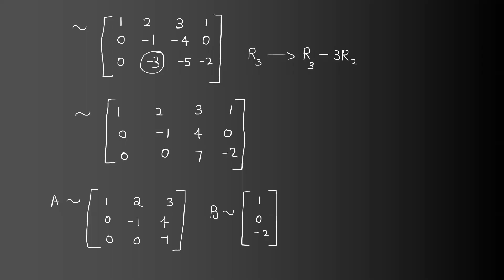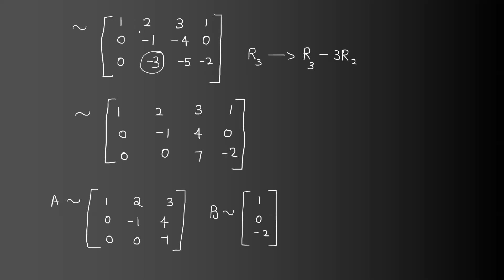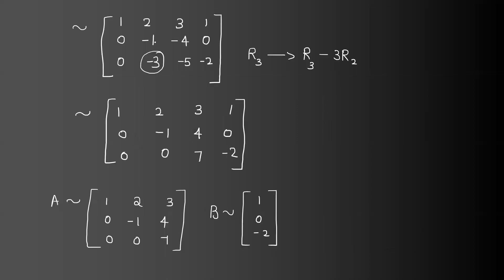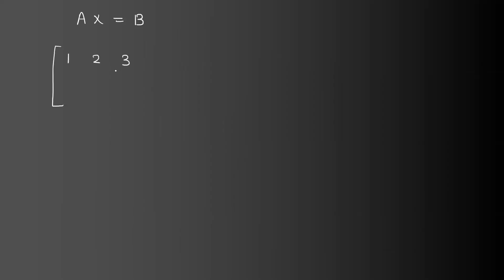Now we solve the equations. From the matrix, x equals b. The equations are: 1·x plus 2·y plus 3·z equals 1, and 0·x minus 1·y minus 4·z equals 0, and 0·x plus 0·y plus 7·z equals something.